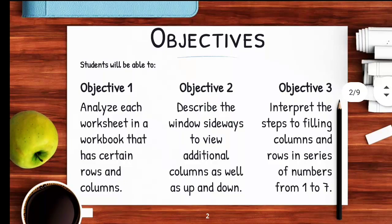The first objective is: students will be able to analyze the worksheet in a workbook that has certain rows and columns. The second objective is: describe the window sideways to view additional columns as well as up and down. The third objective is: students will be able to interpret the steps to filling columns and rows in a series of numbers from one to seven. These are the three objectives we have to cover in this lecture.